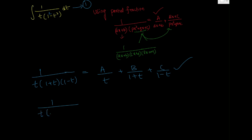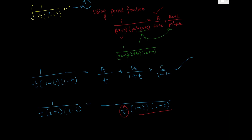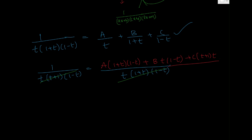Rewriting: 1 / [t·(1+t)·(1-t)] = A/t + B/(1+t) + C/(1-t). Taking LCM = t·(1+t)·(1-t), the numerator becomes: A·(1+t)(1-t) + B·t(1-t) + C·t(1+t). Cancelling denominators on both sides gives: 1 = A(1 - t²) + Bt(1 - t) + Ct(1 + t).